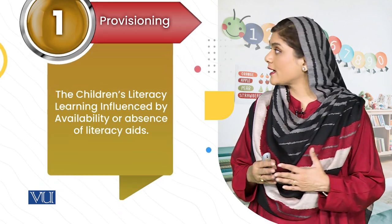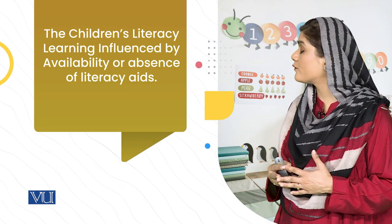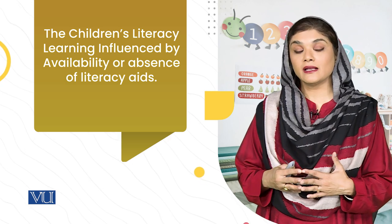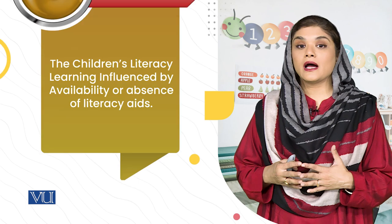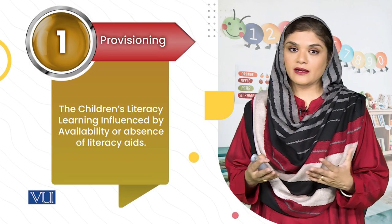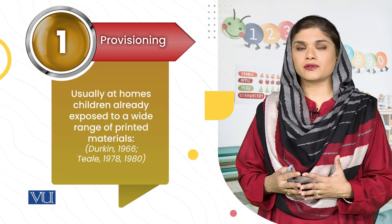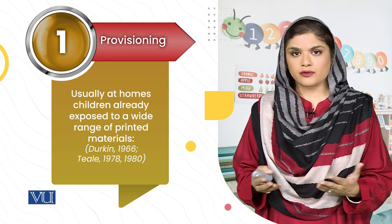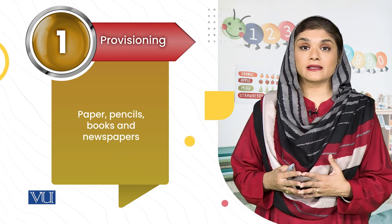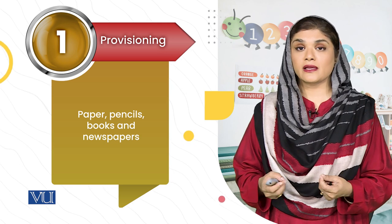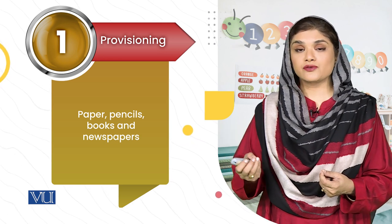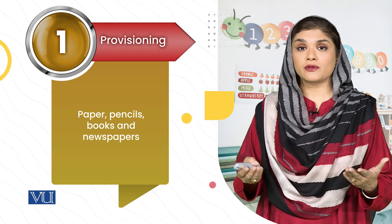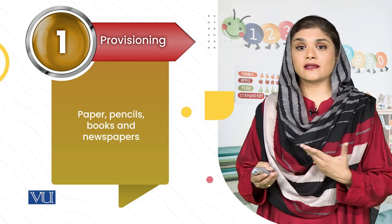Concept Number 1 is about how children's literacy learning is influenced by the availability or absence of literacy materials or literacy aids. When kids are outside their home, they may already be exposed to many literacy materials — for example, the distribution of literacy materials in the environment.